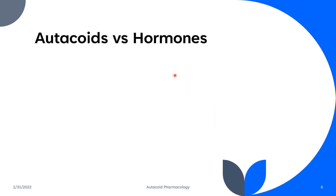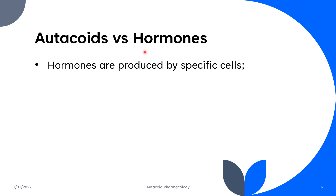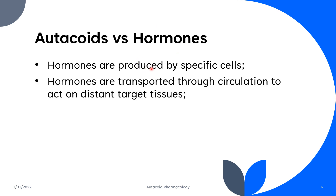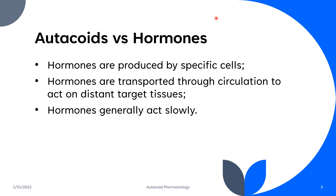How do we differentiate autacoids from other hormones? These substances differ from hormones in the following points. First, hormones are produced by specific cells while autacoids are produced by a wide variety of cells — for example, thyroid hormone is produced by the thyroid gland. Second, hormones are transported through circulation to act on distant target tissues, while autacoids act at the site of synthesis and release. Third, hormones generally act slowly while autacoids act fast.